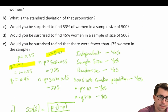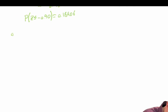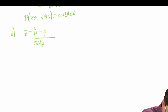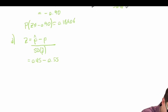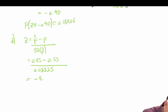Part (d): Would we be surprised to find 45% women in a sample size of 500? Let's check. Z is equal to the observed proportion minus the population proportion divided by the standard deviation of the proportion: 0.45 minus 0.55 divided by 0.0222, which gives us a z-score of negative 4.49.